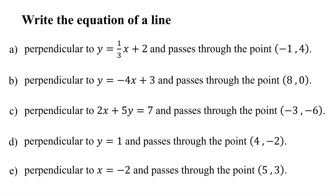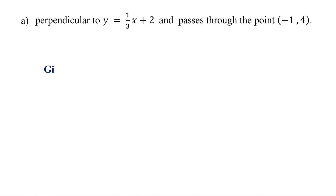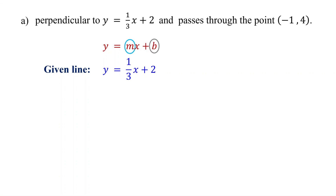In this lesson, you will learn how to write the equation of a line that is perpendicular to a given line and passes through a given point. In our first example, the equation of the given line is y equals one-third x plus 2, which is written in slope-intercept form. In this form, m represents the slope and b represents the y-intercept.